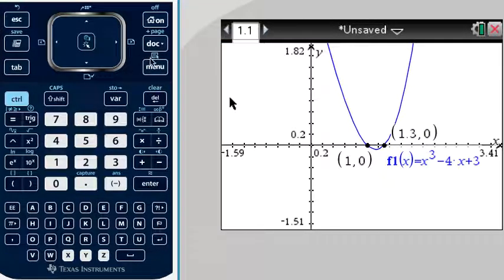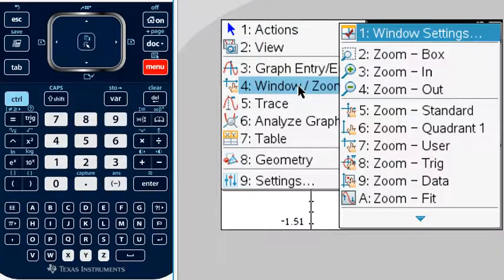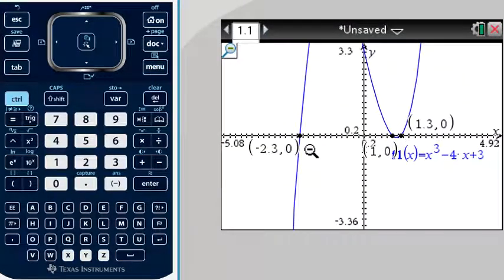So if I zoom out again, I can see them all. We see that our zeros for this cubic function are x equals negative 2.3, x equals 1, and x equals 3.